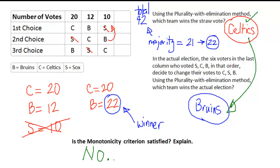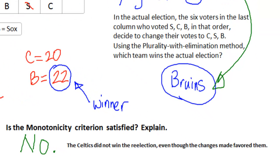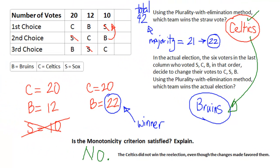And again, the reason simply being is because the Celtics did not win the re-election, even though the changes that were made actually favored them. So here's another example of a criterion that's not satisfied.